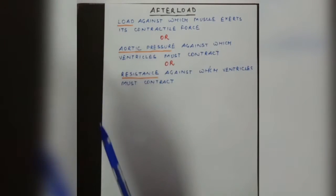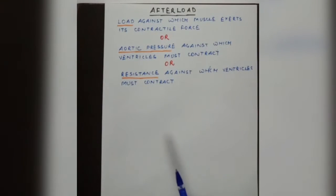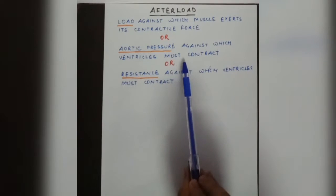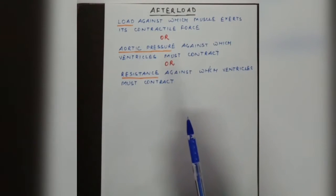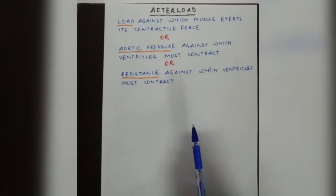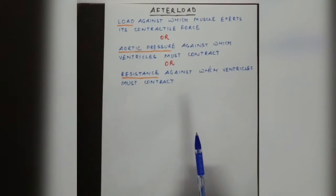In the heart's case, afterload is the aortic pressure against which the muscle must contract. The aortic and pulmonary valves are closed, and those closed valves exert pressure — the aortic pressure. So aortic pressure is the pressure against which the ventricles must contract to eject blood.